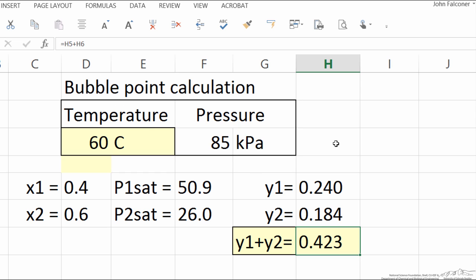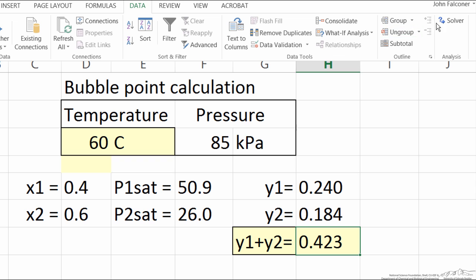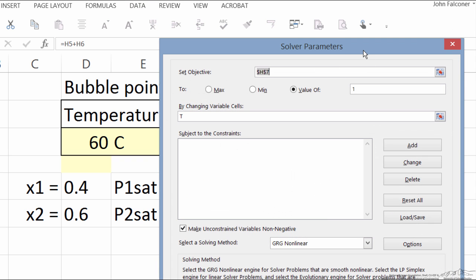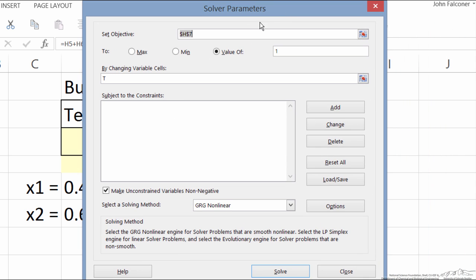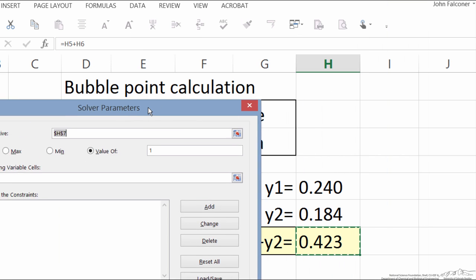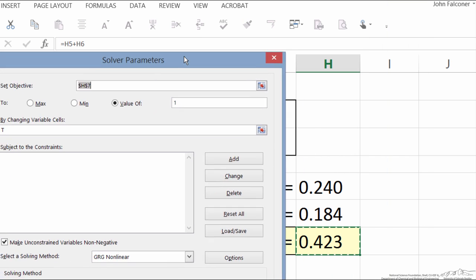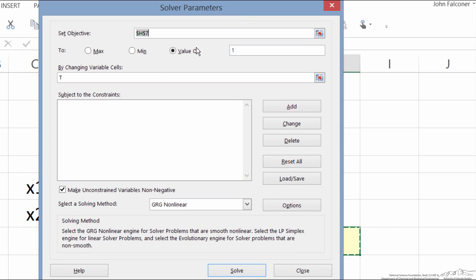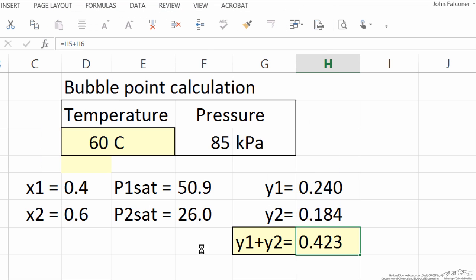If I have the correct temperature, then these mole fractions should add to 1, so what I'm going to do is use solver. Going into data, solver, and what I'm going to do is adjust H7. H7 is the summation, and I'm going to change the cell where temperature is. I want this value equal to 1. If I hit solve...